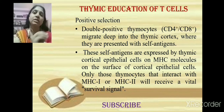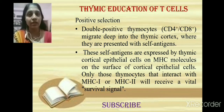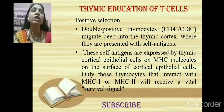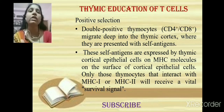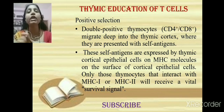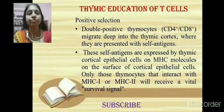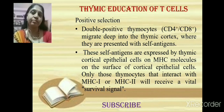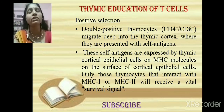After TCR alpha-beta rearrangement, T cells undergo thymic education to form fully functional mature T cells capable of providing immunity against various antigens. This education teaches the developing T lymphocytes how to identify and remove antigens. Thymic education is divided into two important stages: positive selection and negative selection. Before these selections occur, the cells become double-positive — meaning they express both the CD4 and CD8 markers simultaneously.